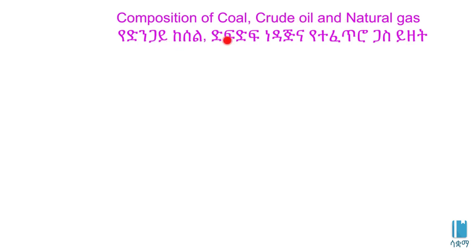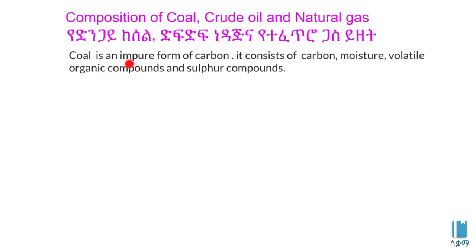This is the composition of coal, crude oil, and natural gas. Coal is an impure form of carbon. It consists of carbon, moisture, volatile organic compounds, and sulfur compounds.